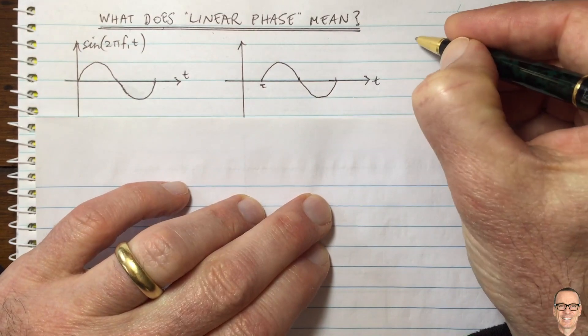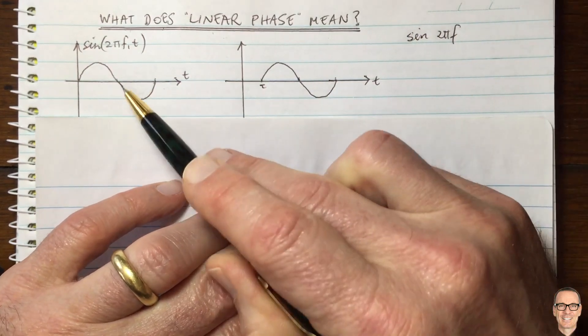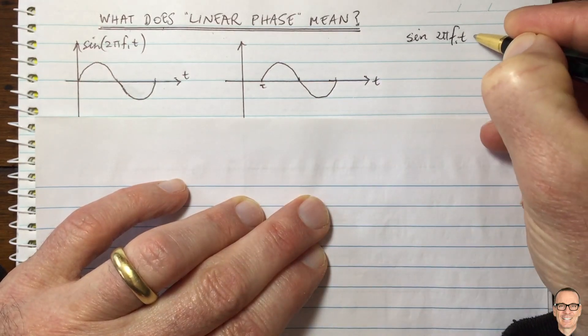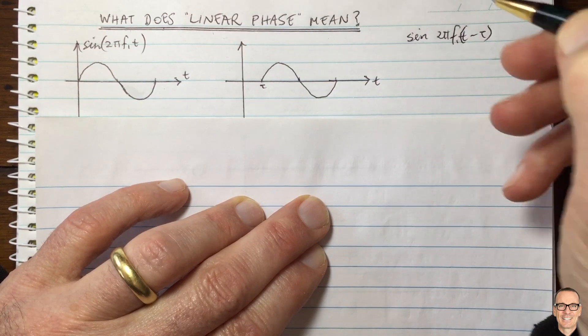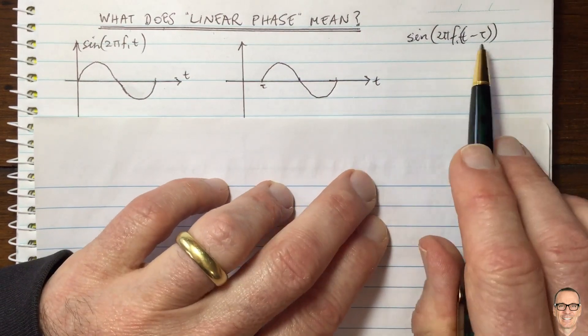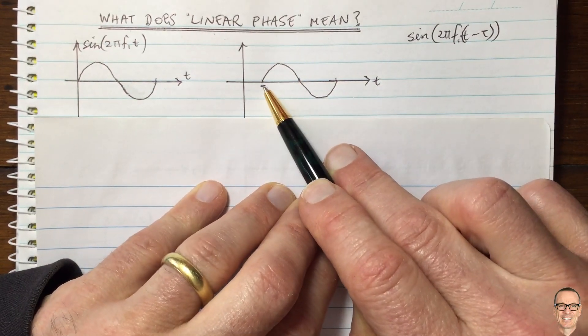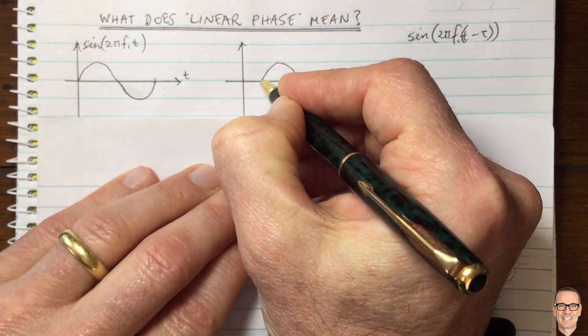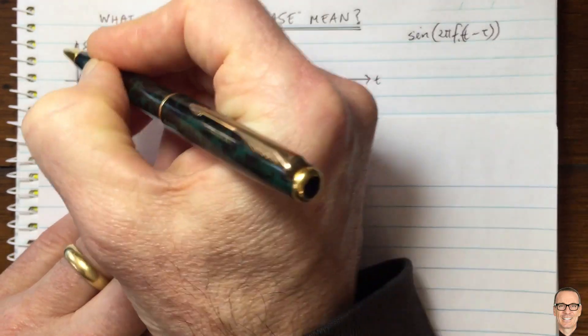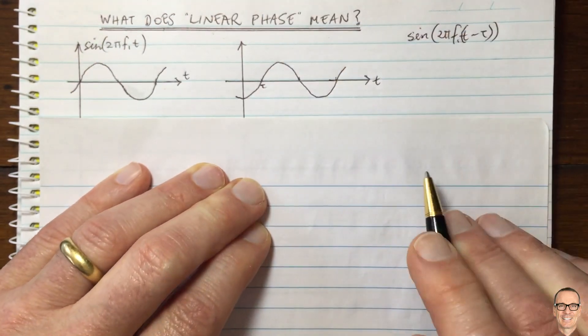So over here we have sine of 2 pi f1. We've done it for a particular frequency, this frequency f1, the one that I've drawn. With t minus tau, this gives us the signal that we have. And now we've got to find out the value of tau for this particular delay. And so I'm going to draw in also the rest of the signal here because we're actually considering a sine wave. I've only drawn one period of it here, but we're considering the sine wave going on.